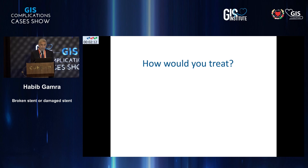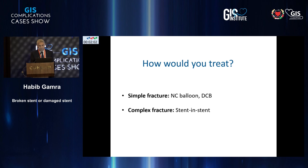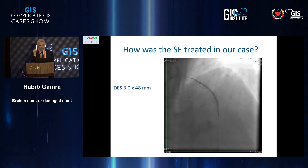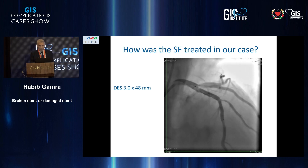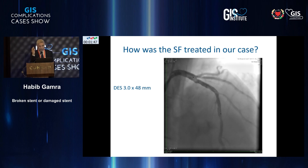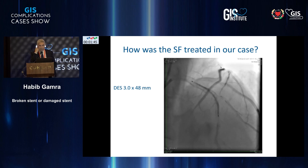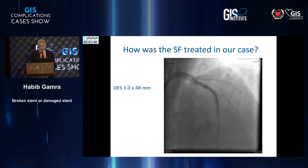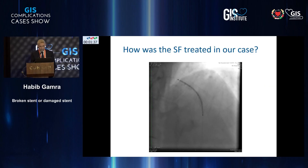How will you treat stent fracture? It depends on the type. A stent fracture can be fixed with non-compliant balloon inflation, or probably a scoring balloon is a better option. If it is a complex fracture, then you have to stent into the stent. In this case, my colleague used a longer stent covering both segments — 3 by 48 mm — and this is the final result.